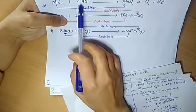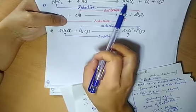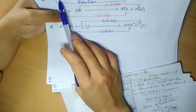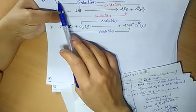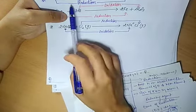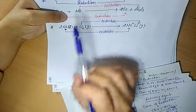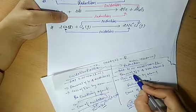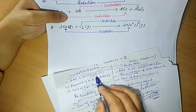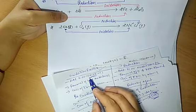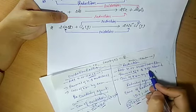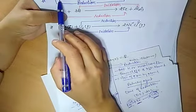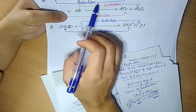Next example: MnO₂ plus 4HCl forms MnCl₂ plus Cl₂ plus H₂O. MnO₂ is providing oxygen to Cl — non-metallic element removal from MnO₂ means reduction of manganese. Addition of non-metallic element Cl₂ to Cl means oxidation. Oxygen is removed from MnO₂, so this is a reduction reaction.